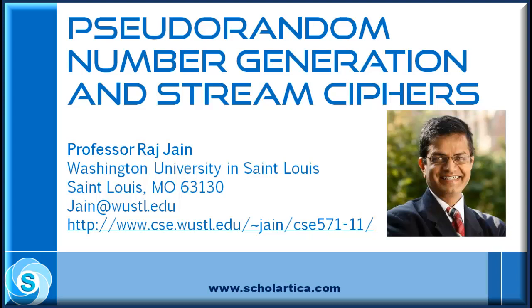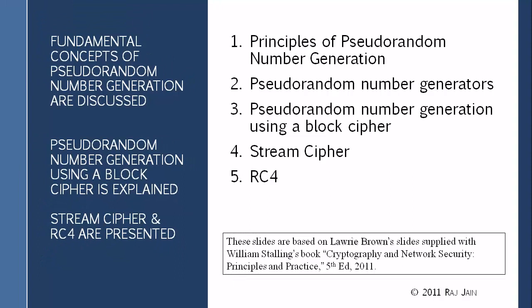This lecture is about pseudo-random number generation and stream ciphers. We talked about stream ciphers already — the last three modes like output feedback mode and counter mode were stream ciphers because you take a bit, exclusive-OR it with the plaintext and some random thing, and out comes the ciphertext. There are other ciphers designed similarly, and other methods of generating the random bit stream, which we will discuss today.